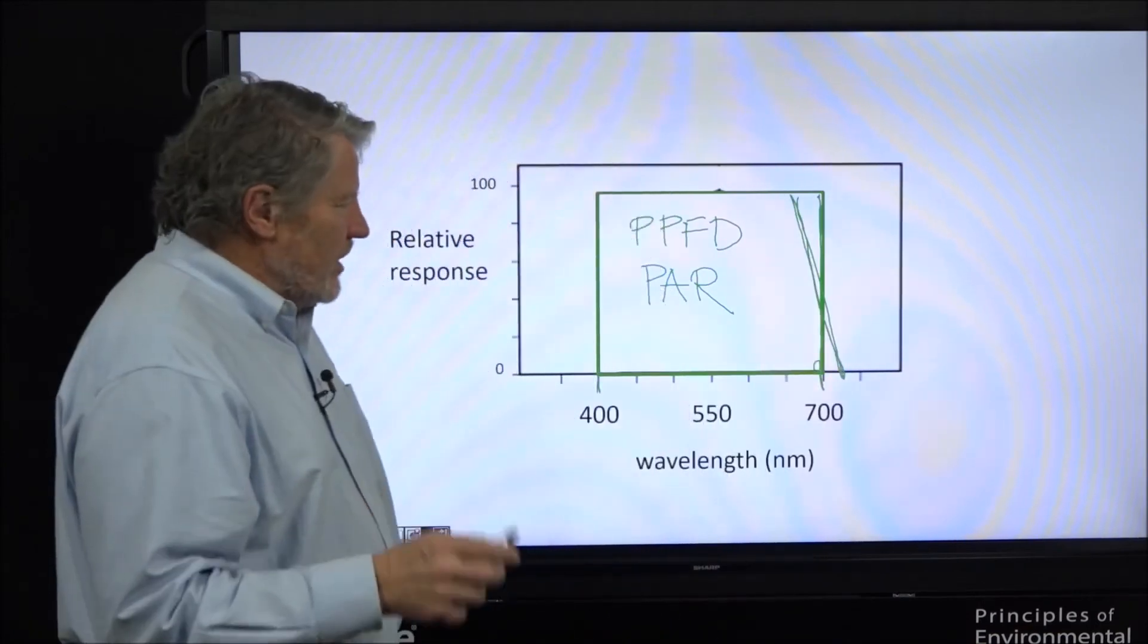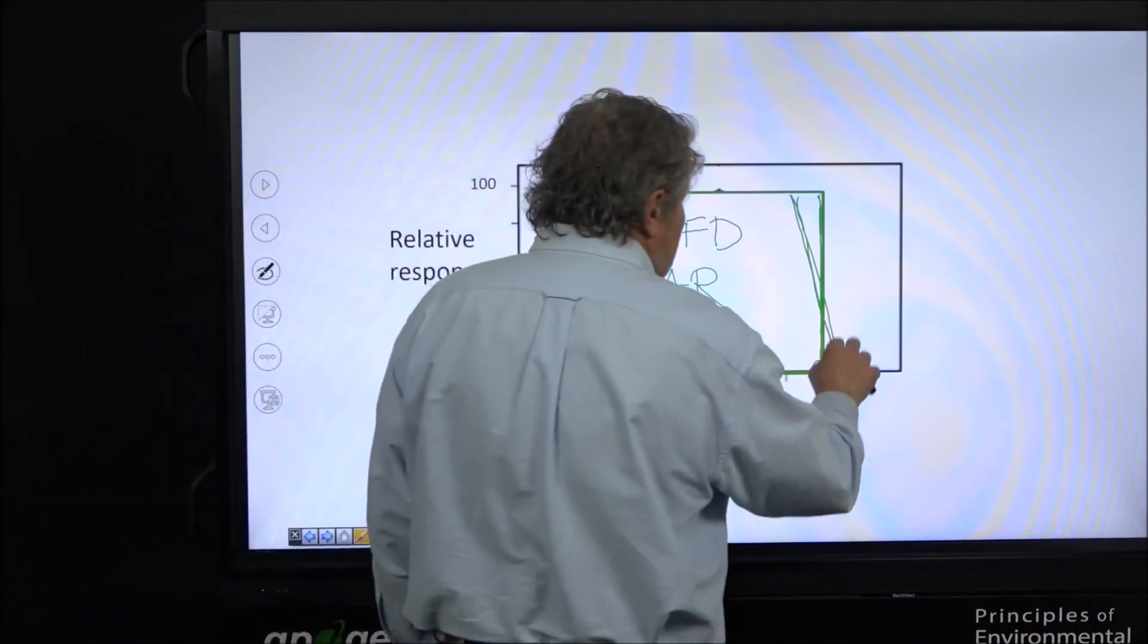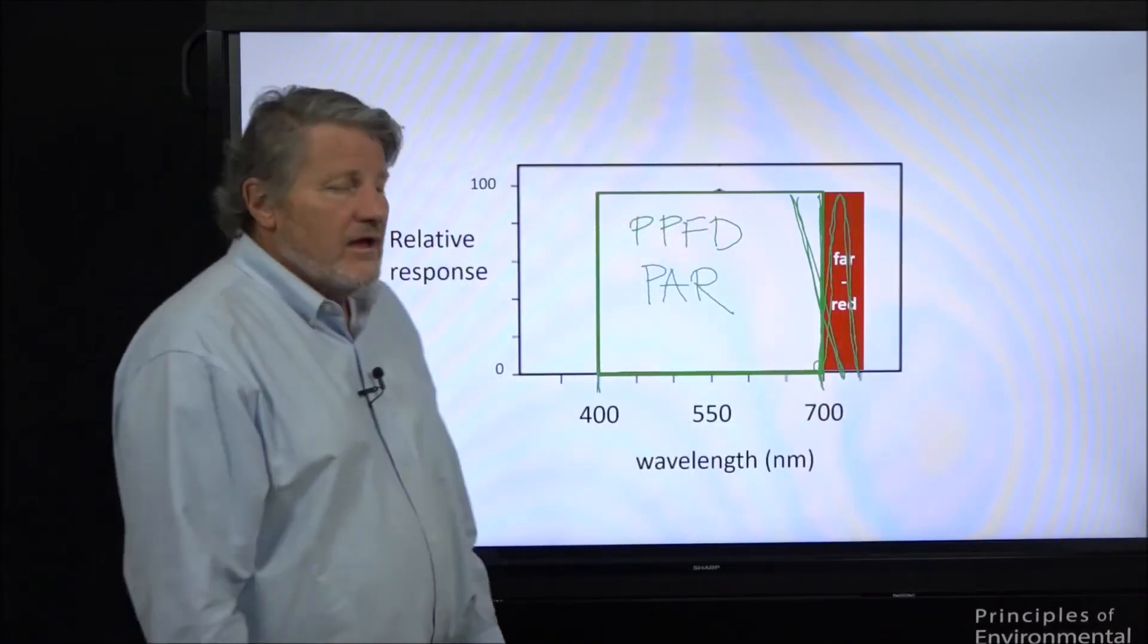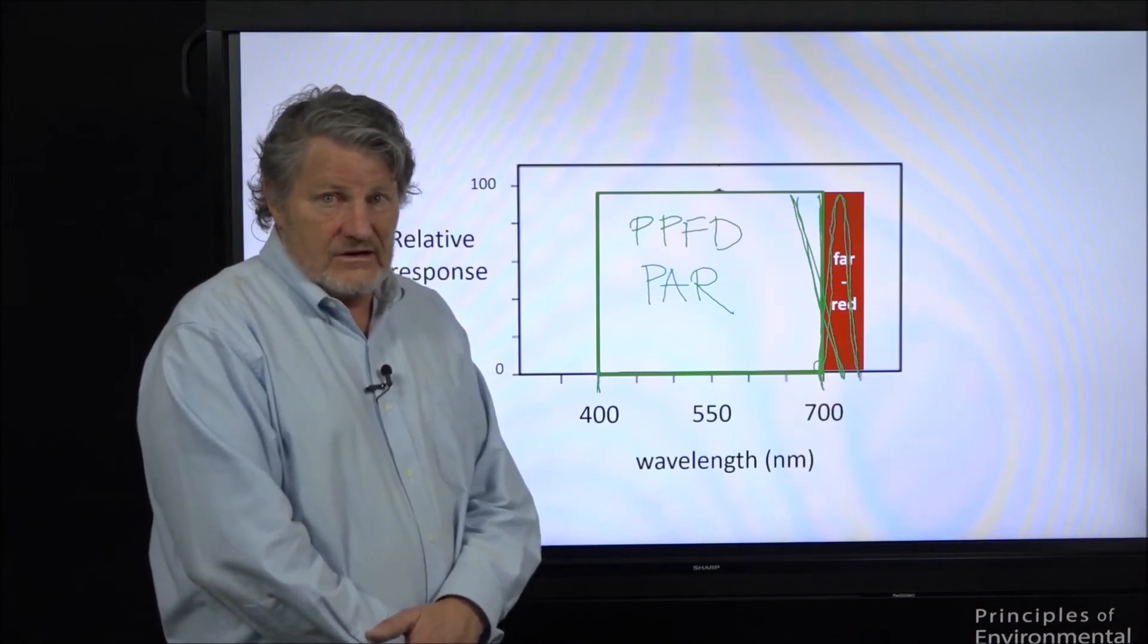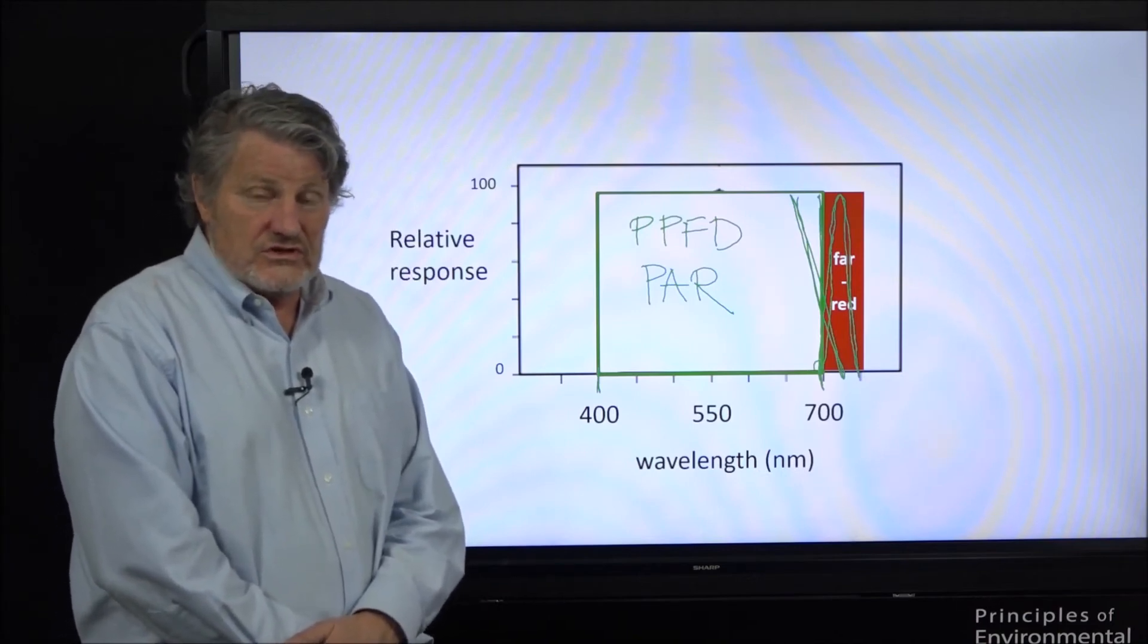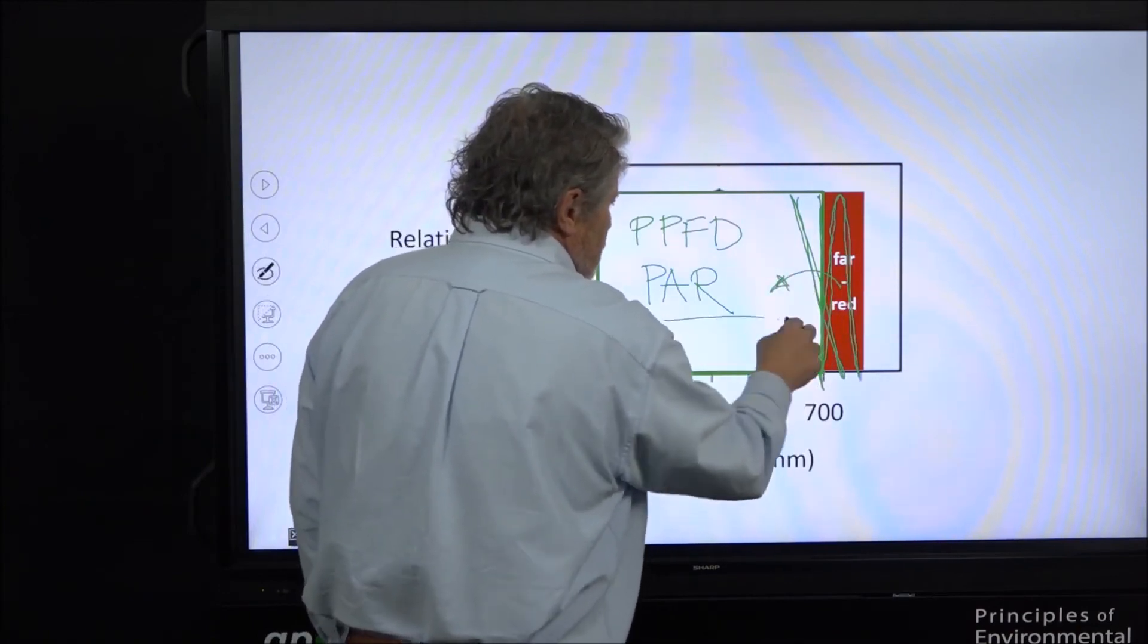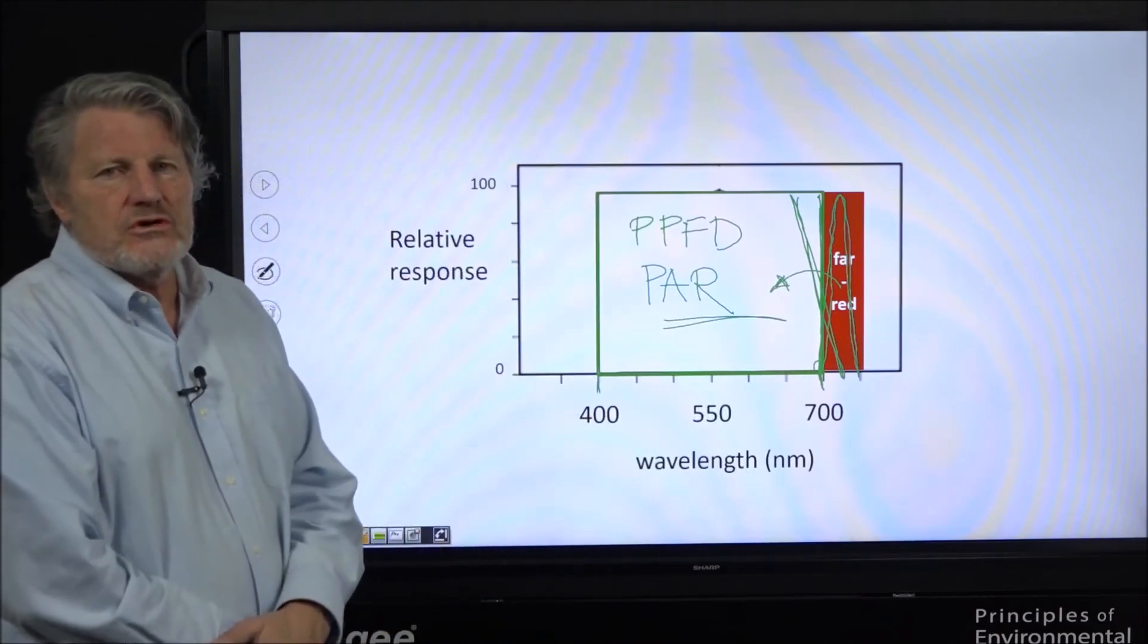But we now have a very efficient far red LED and it peaks at 730. We have studied that LED for far red and those photons are photosynthetically active. So we need to rethink our definition of photosynthesis with this in mind. They're not directly photosynthetic, they're synergistic with these shorter wavelengths in here and when they're coupled together they're synergistic.